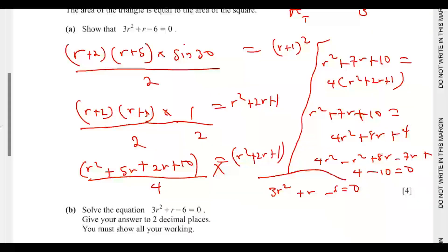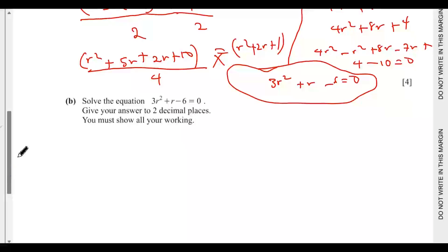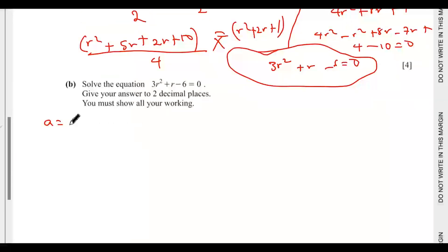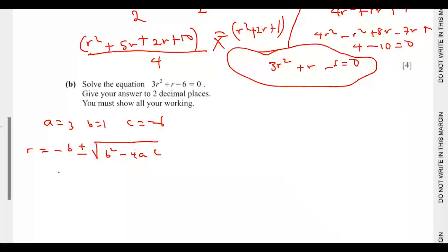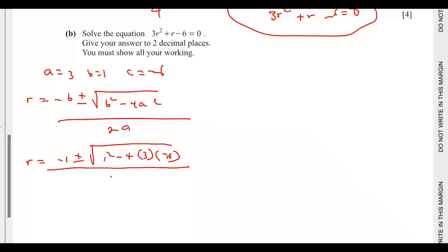Part b: solve the equation 3r² + r − 6 = 0, giving your answer to two decimal places, showing all working. Here a = 3, b = 1, and c = −6. Using the quadratic formula: r = (−b ± √(b² − 4ac)) / 2a, substituting gives r = (−1 ± √(1² − 4 × 3 × −6)) / (2 × 3).